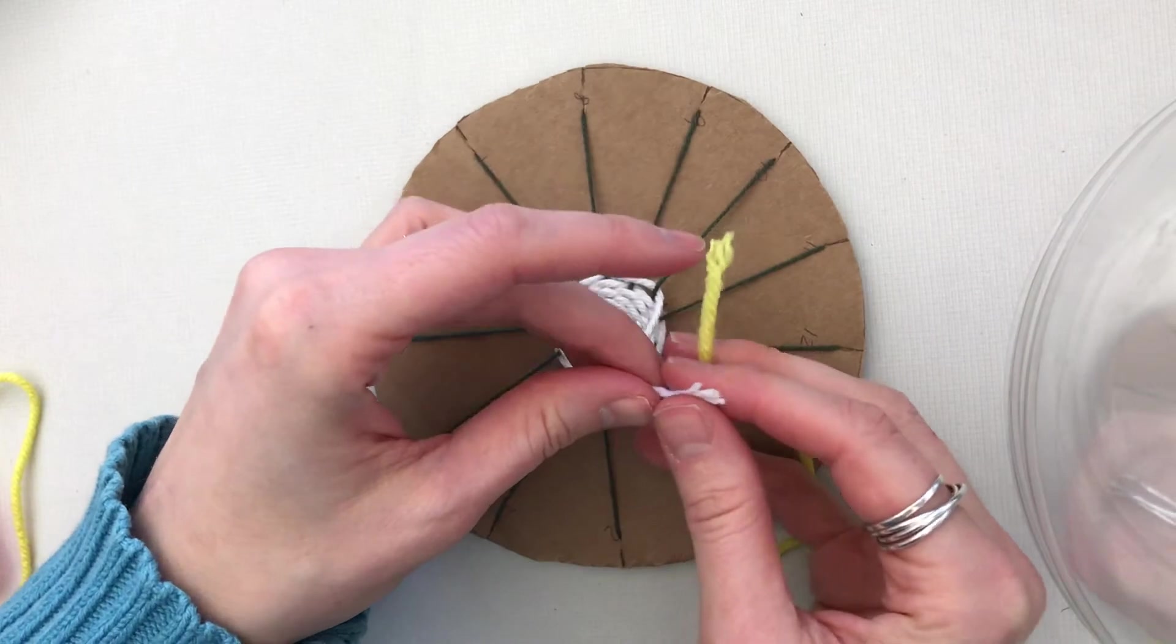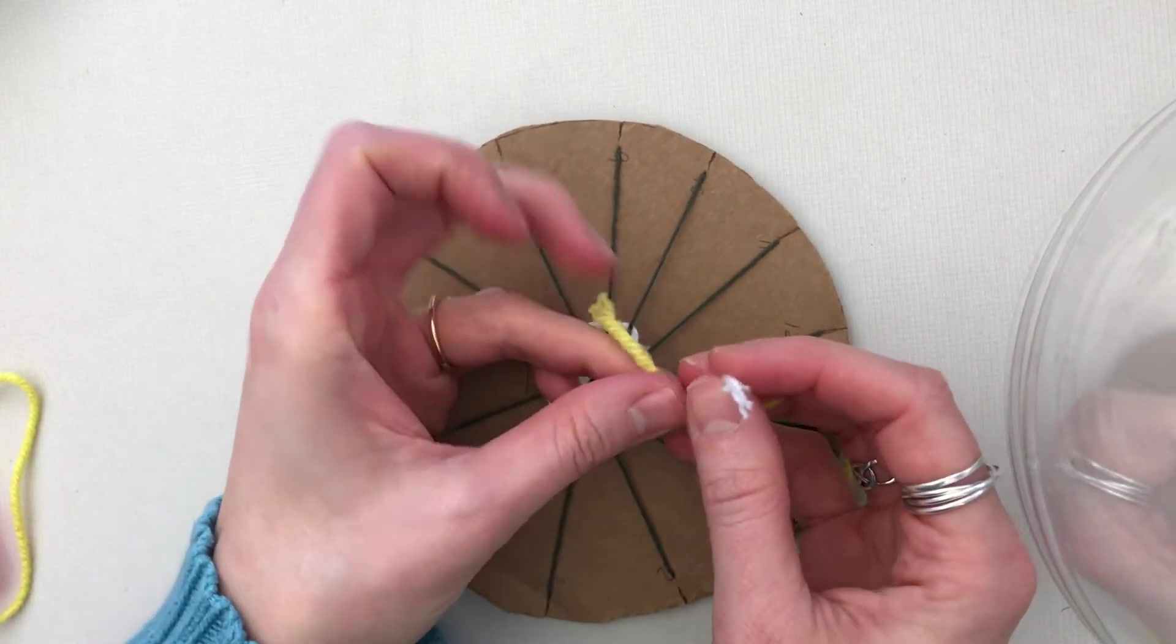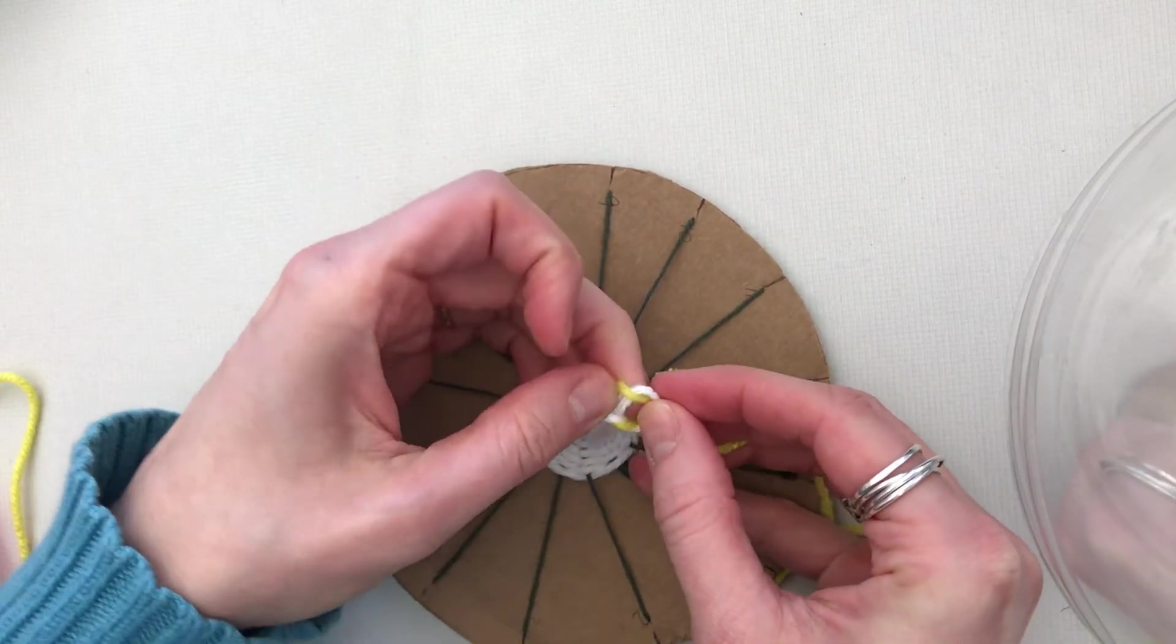Then remember our square knot: left over right and under, and right over left and under.